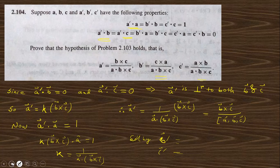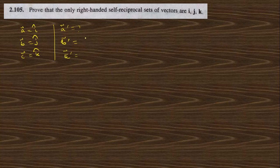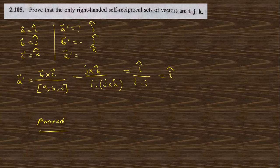For question 2.105: prove that the only right-handed self-reciprocal set of vectors is i, j, k. Using the formula, A prime = (B × C)/[ABC]. With A = i, B = j, C = k: A prime = (j × k) / (i · j × k) = i / 1 = i cap. Similarly B prime = j cap and C prime = k cap. So the set i, j, k is its own reciprocal, which proves it is self-reciprocal. You can do the remaining parts yourself by following the same process.